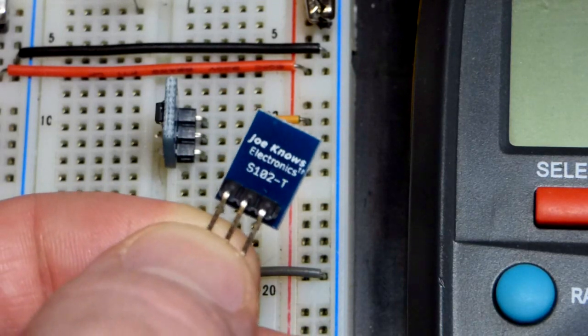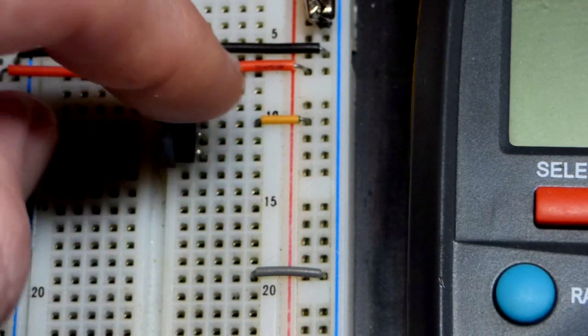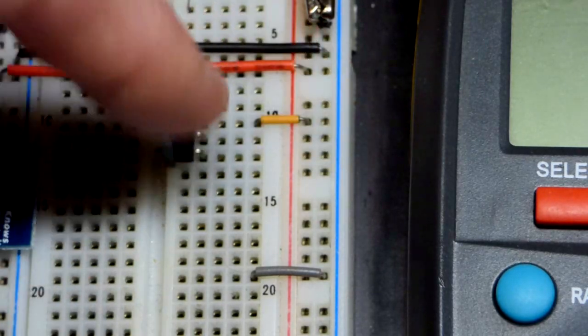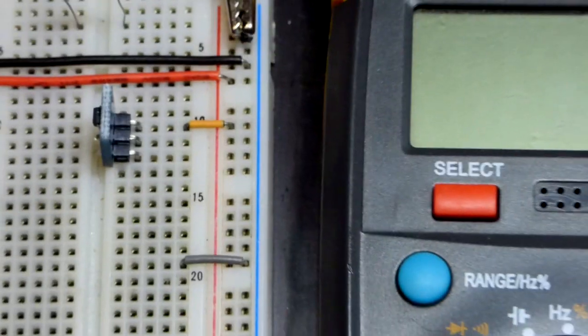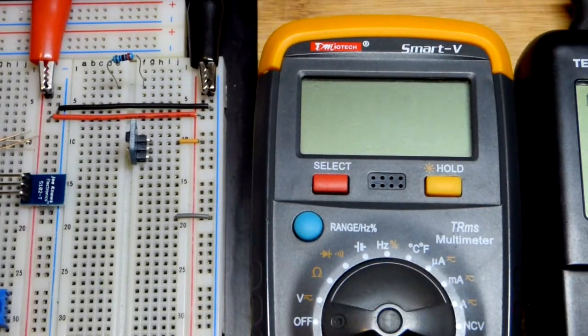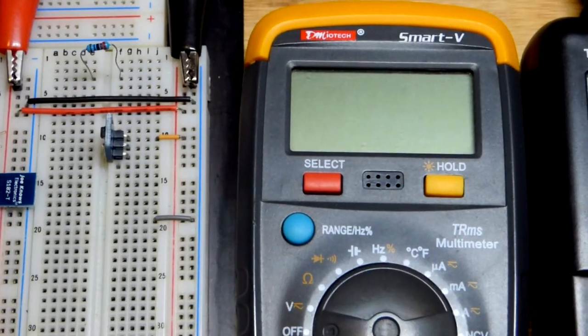If you put it in the right direction, it's going to limit how much current flows through it. These are rated for one milliamp of current.